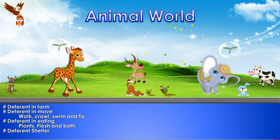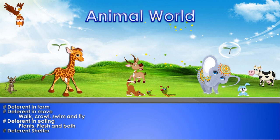Animals are different from each other. Looking at these pictures, all the animals are different. They differ in form — their body structure is different. You can see the giraffe is tall, the elephant is big, and the rat is very small. They all move differently. Some animals use their four legs to walk, like zebra, giraffe, lion, and tiger.